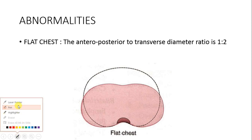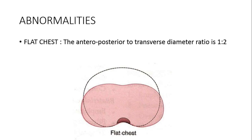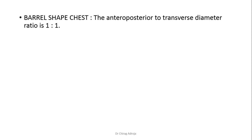First chest abnormality is flat chest. Anteroposterior to transverse diameter (Hutchinson's index) is 1:2 — so the transverse diameter is almost double the anteroposterior diameter. Flat chest is seen in lean and thin individuals, some wasting diseases, congenital diseases, ricketts, or patients having childhood chronic obstruction of nasal cavity by bilateral adenoids.